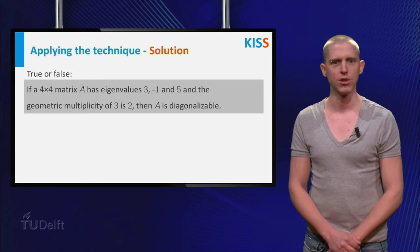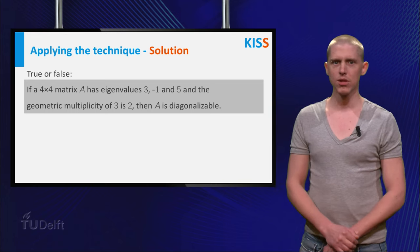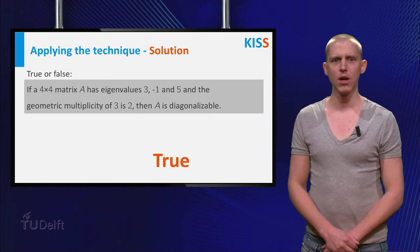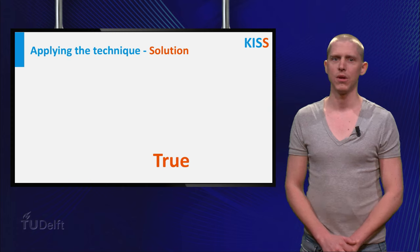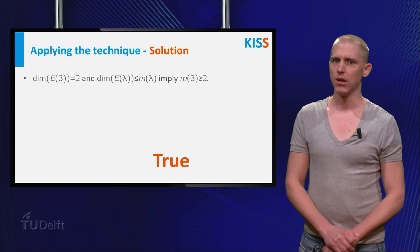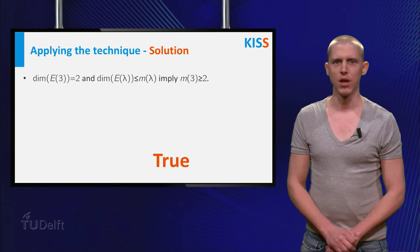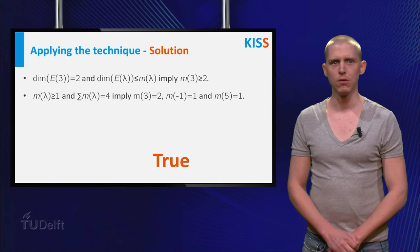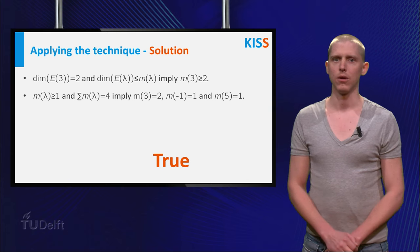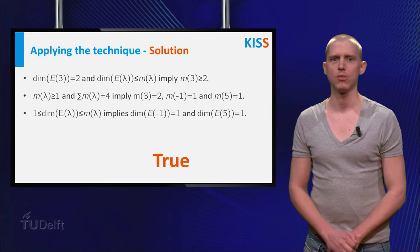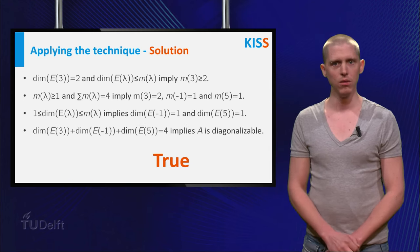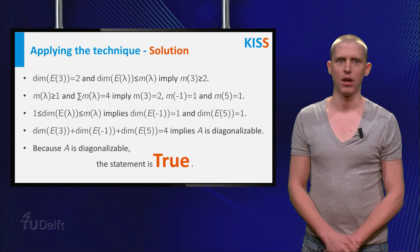Now you can find and formulate the solution to the question, which is the final step. Because the sum of the geometric multiplicities is 4, the matrix A is diagonalizable. So the statement is true. How should you write down your answer during the exam? You can use your plan of attack to find the correct order of the arguments to support your final answer. The arguments are: the given geometric multiplicity of eigenvalue 3 implies an algebraic multiplicity of at least 2; this implies an algebraic multiplicity of 1 for both other eigenvalues and 2 for eigenvalue 3; the algebraic multiplicity of 1 for eigenvalues minus 1 and 5 imply a geometric multiplicity of 1 for both. The sum of the geometric multiplicities equals 4, so A is diagonalizable, and therefore the statement is true.